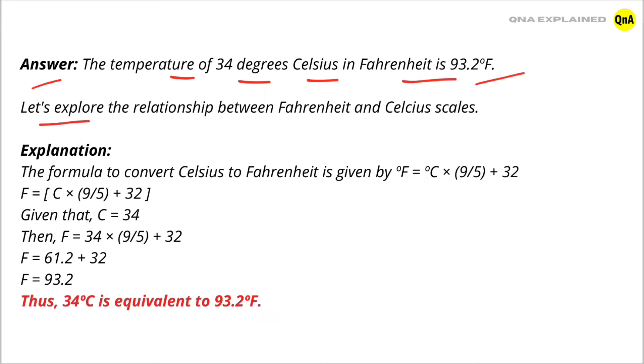Let's explore the relationship between Fahrenheit and Celsius scales. Explanation: The formula to convert Celsius to Fahrenheit is given by F = °C × (9/5) + 32.